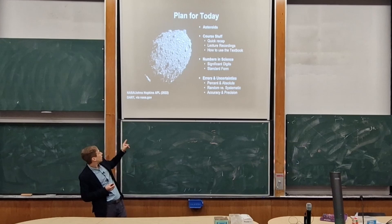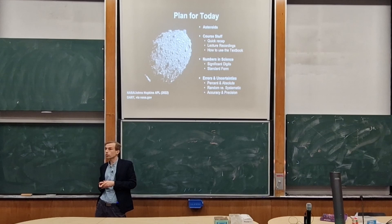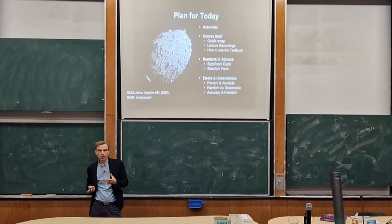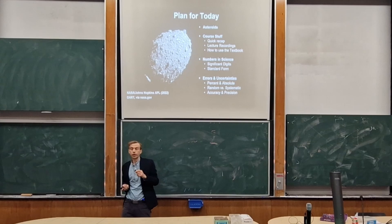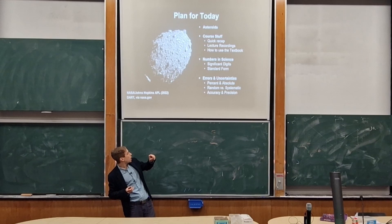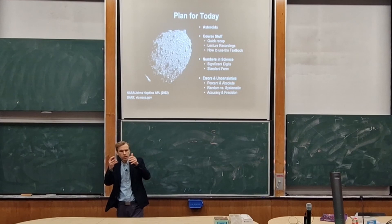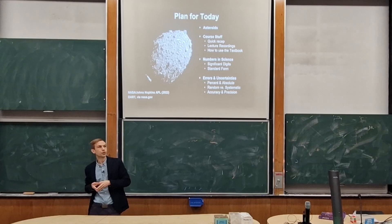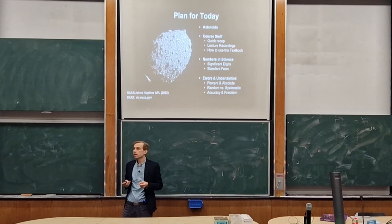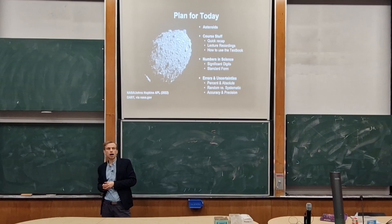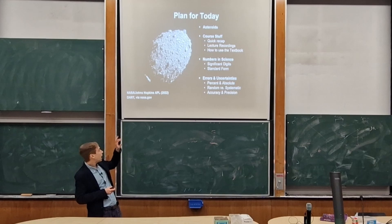If you want to do something like crash a satellite into an asteroid, you've really got to master all of the topics we're going to be learning about today. This asteroid was about 11 million kilometers from Earth when the collision occurred, it's only 150 meters across, and the collision occurred at something like 14,000 miles an hour. So you absolutely have to master things like accuracy and precision, errors and uncertainties, standard form and significant digits — two very crucial things whenever we're considering values in science and how they differ from values in mathematics.